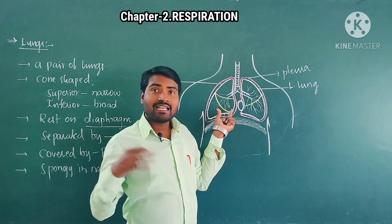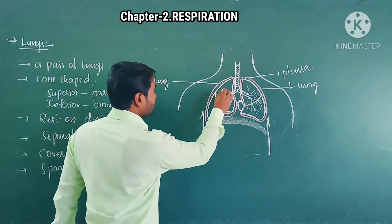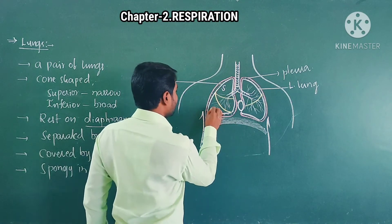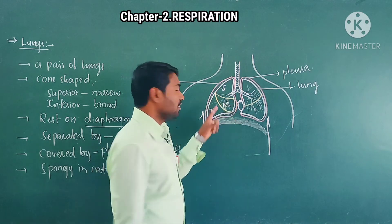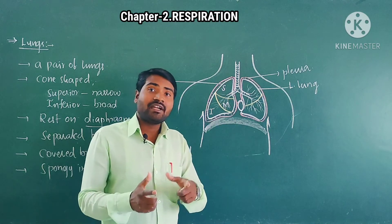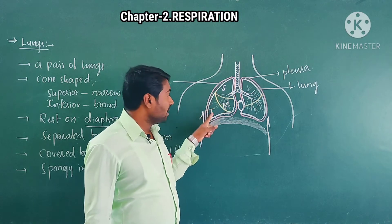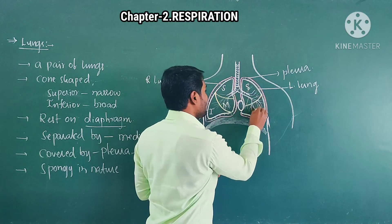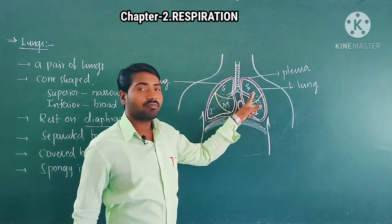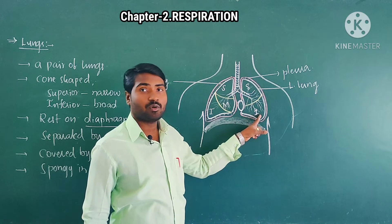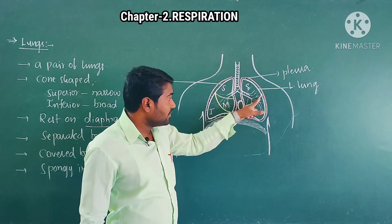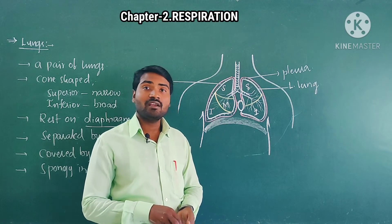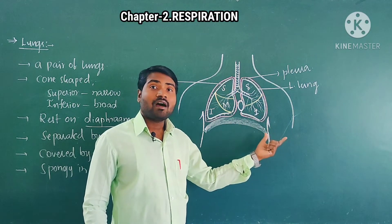How many parts are present in the right lung? Three parts: superior lobe, middle lobe, and inferior lobe. Whereas in the left lung, there are only two lobes: superior lobe and inferior lobe. The division between lobes is called a fissure. The left lung is divided by the oblique fissure.